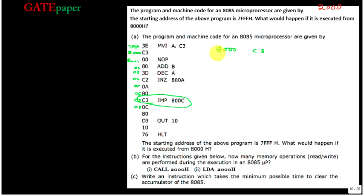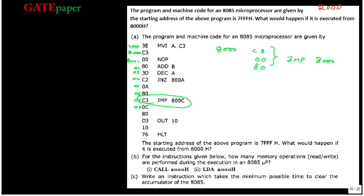Whatever the next two bytes are, they will be taken as the address for the jump instruction. The next two bytes are at 8001H: C3, 00H, and at 8002H: 80H. From this, C3 means unconditional jump, the next byte is the lower 8-bit address, and the one after is the upper 8-bit address. So this equals JMP 8000H.